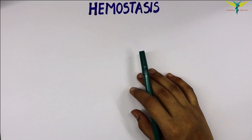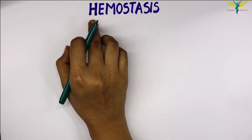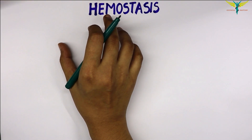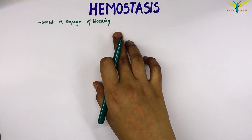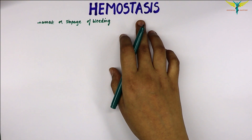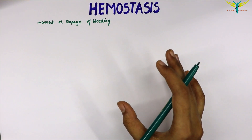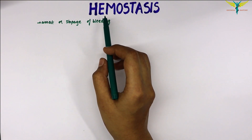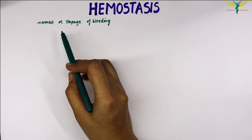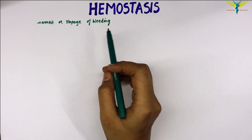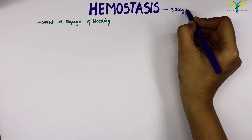In this video, let's learn about hemostasis. Hemostasis is defined as the arrest or stoppage of bleeding. Don't get confused between hemostasis and homeostasis — homeostasis means the maintenance of a constant internal environment, but hemostasis means arrest or stoppage of bleeding.